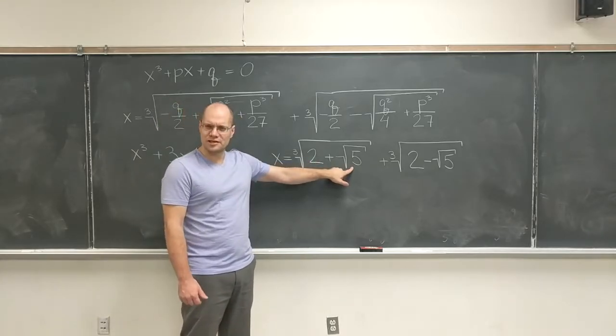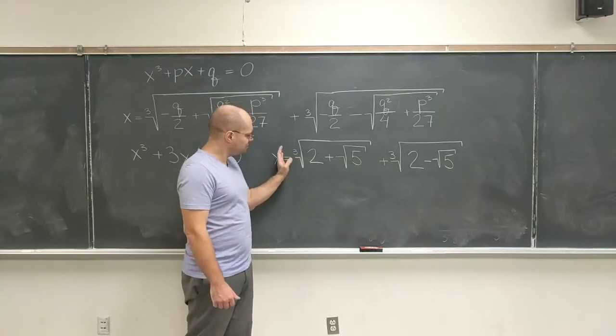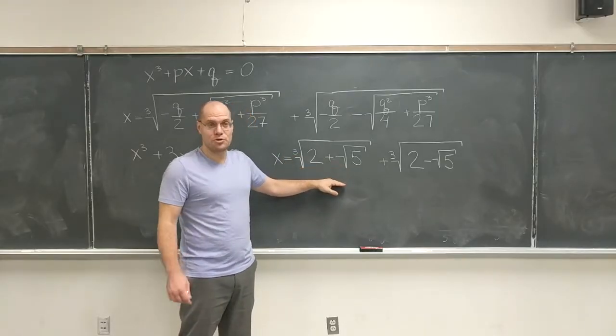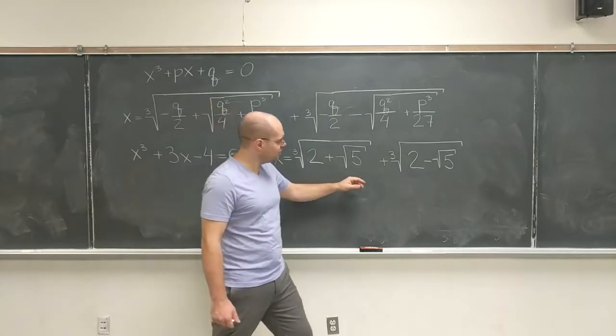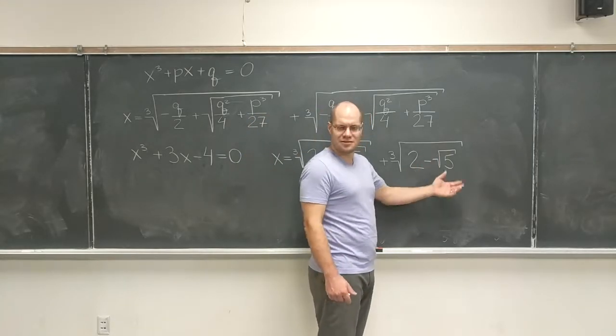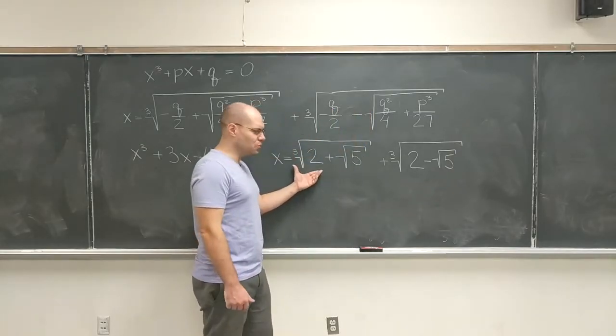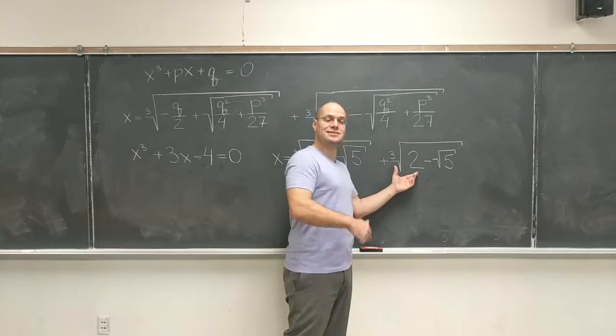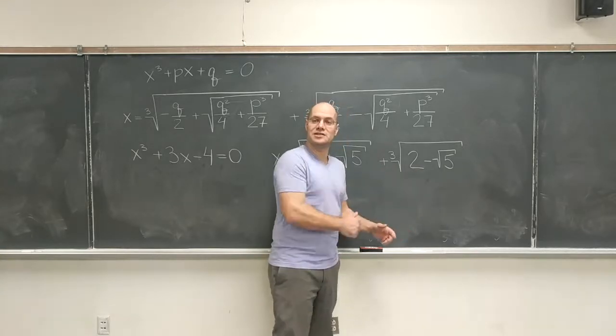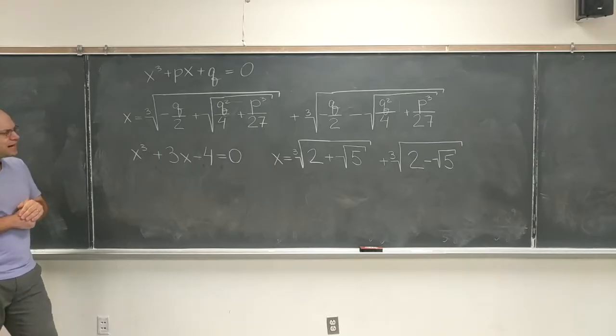This is a little bit over 2, right? So this is a little bit over 4. So when you take the cubic root, it's still a little bit over 1. And this is a little bit less than 0. So when you take the cubic root, it's still a little bit less than 0. So something that's a little bit more than 1, plus something that's a little bit less than 0. So it's quite conceivable that this complicated expression is 1.